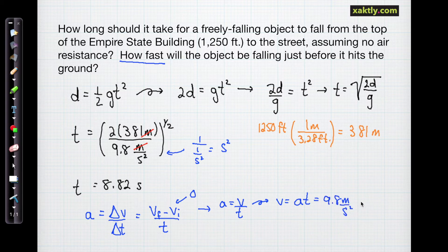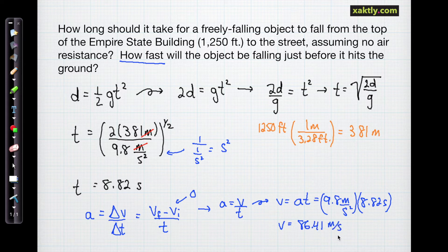A is, of course, the acceleration of gravity. So it's 9.8 meters per second squared times 8.82 seconds. And then if I multiply those two things, my units are going to be meters per second, and it should be 86.41 meters per second.